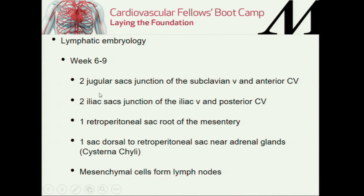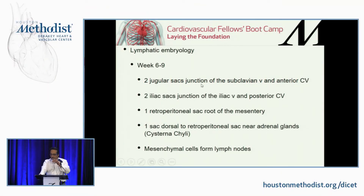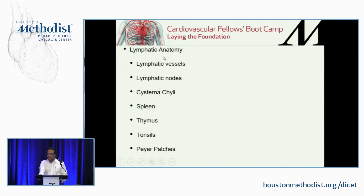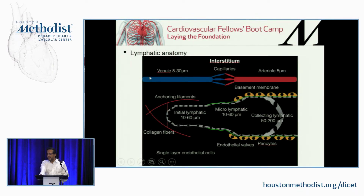At week six to nine, the two jugular sacs form at the junction of the subclavian vein and the anterior cardinal vein. There are six sacs basically: two jugular, two iliac, one retroperitoneal, and one big dilatation in the abdomen that is going to be the cisterna chyli. All the mesenchymal cells form the lymph nodes. What constitutes the lymphatic anatomy includes the obvious components — but don't forget about tonsils, Peyer's patches, spleen, and the liver in the fetus. We are going to go over the anatomy a bit later in the physiology section, so don't try to memorize all of that now.